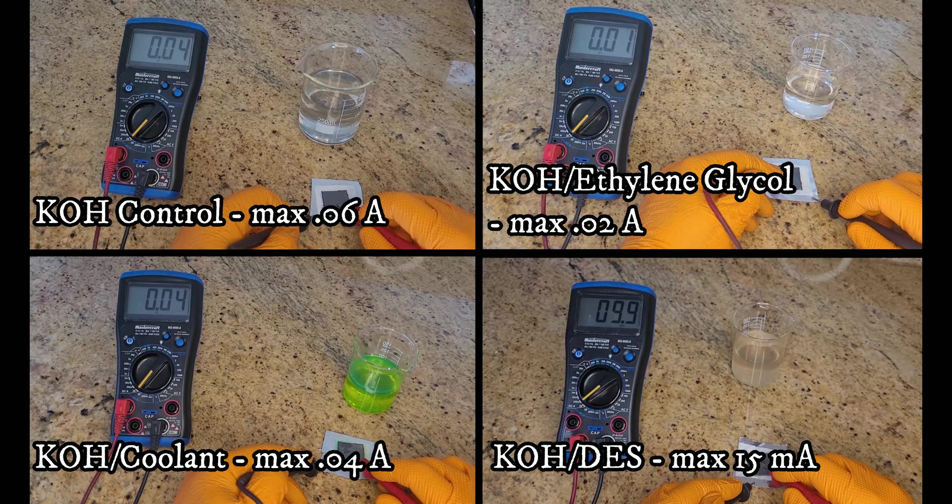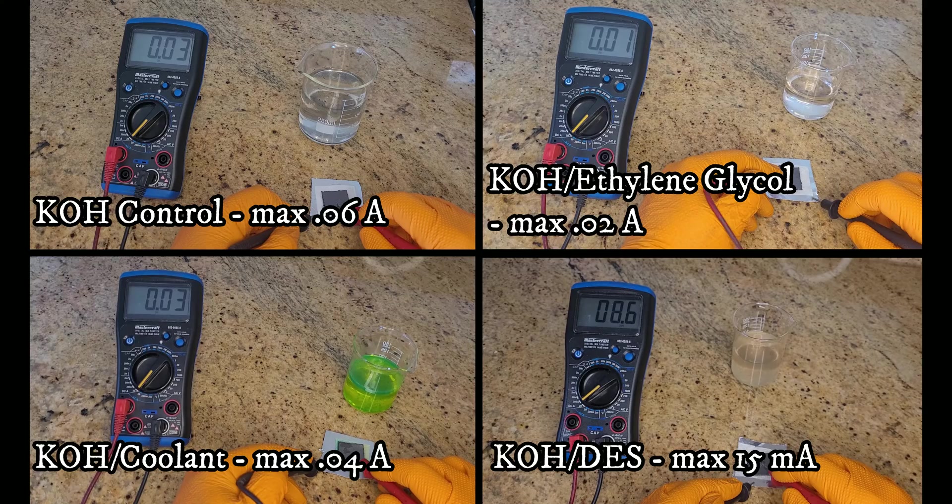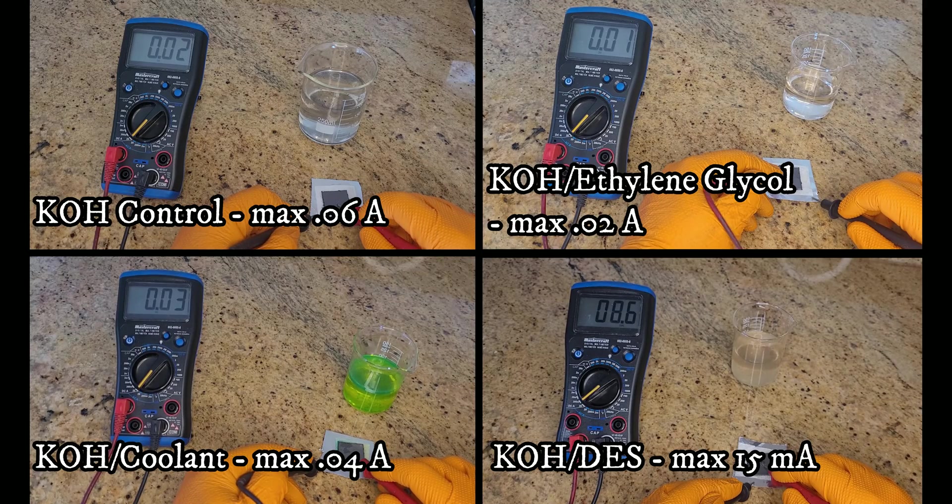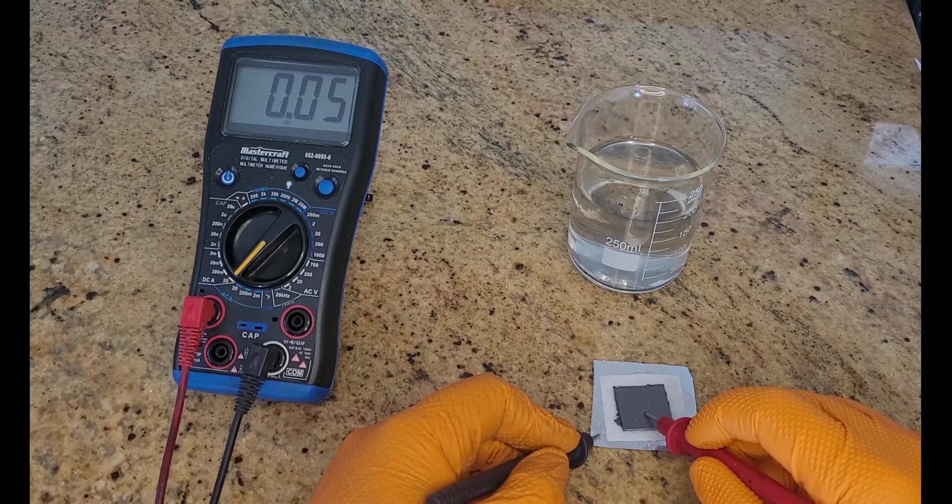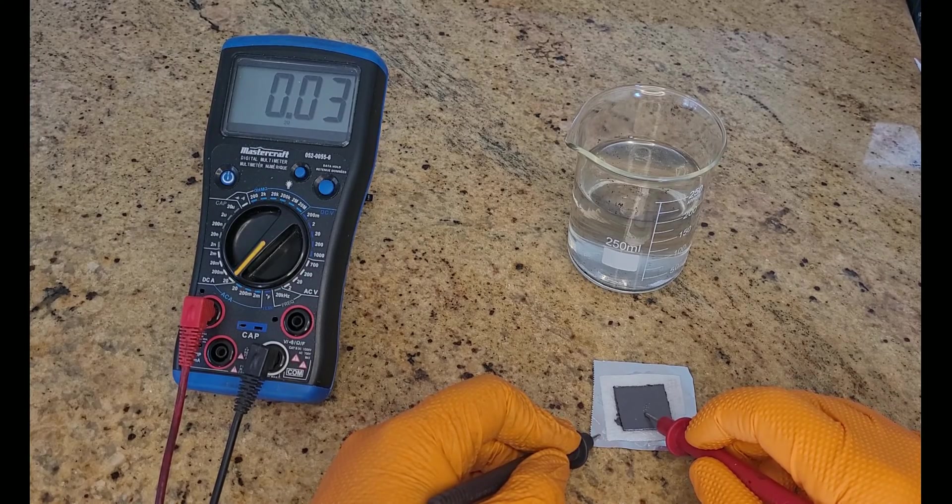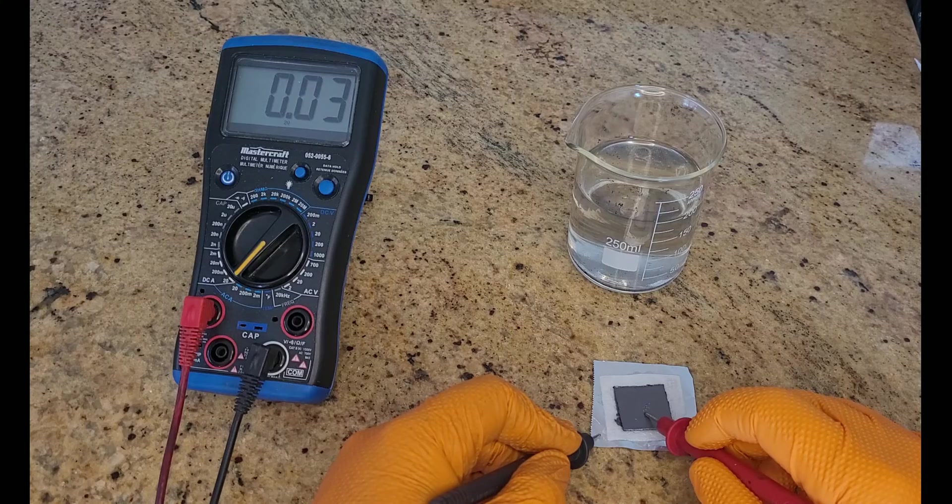With the load removed, the results varied a bit more. They all start with a surge and settle out after a couple seconds. Unfortunately, the best performer in this category is the original solution, coming in at 0.06 of an amp during its surge, before coming down to 0.03 of an amp.